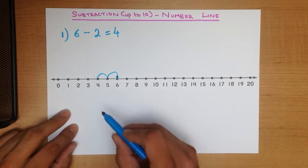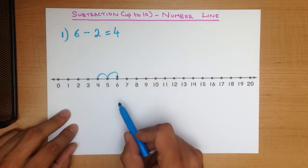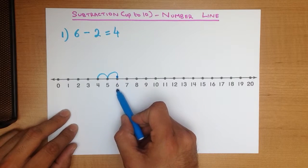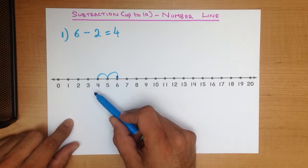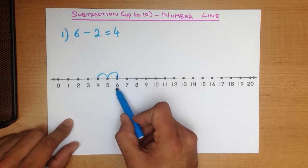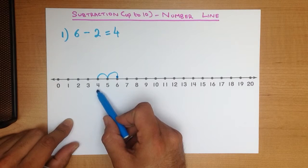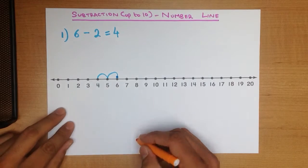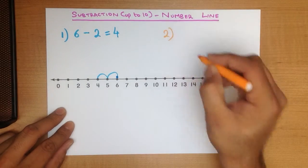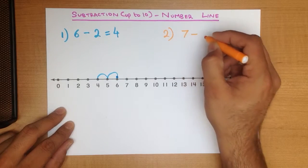And that's our answer. This is how the number line works — we start with the first number, which is 6, and because it's minus we go backwards. It's 2, so it's 2 jumps: 1, 2, and there is our answer: 4. Let's change colors and try another example — what is 7 minus 4?